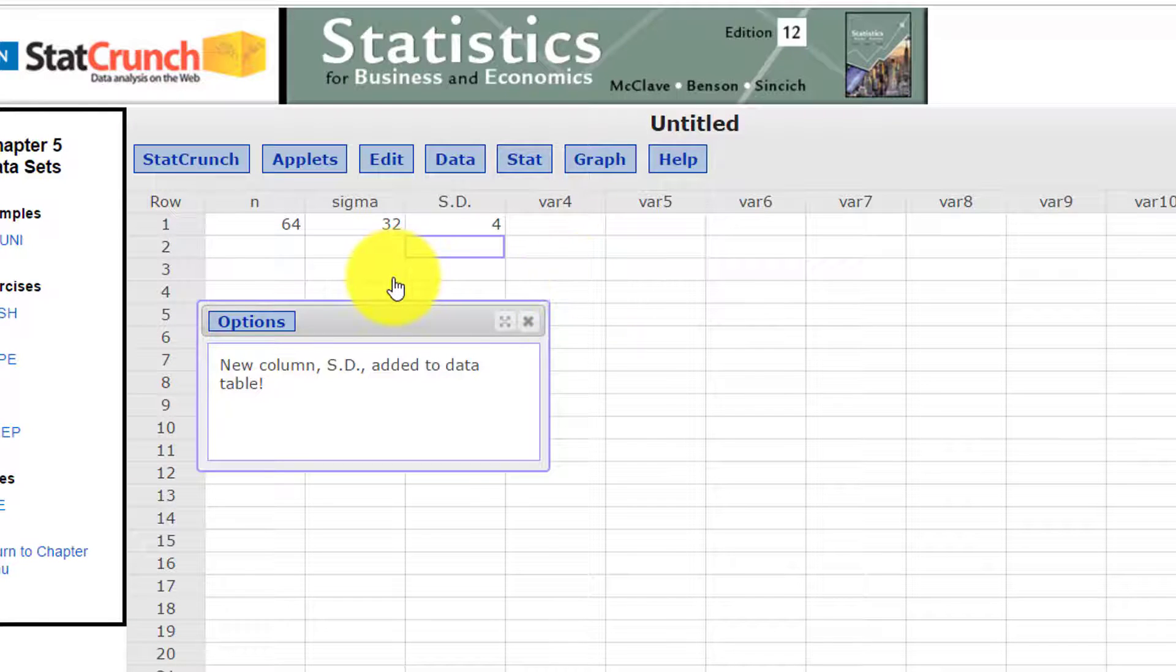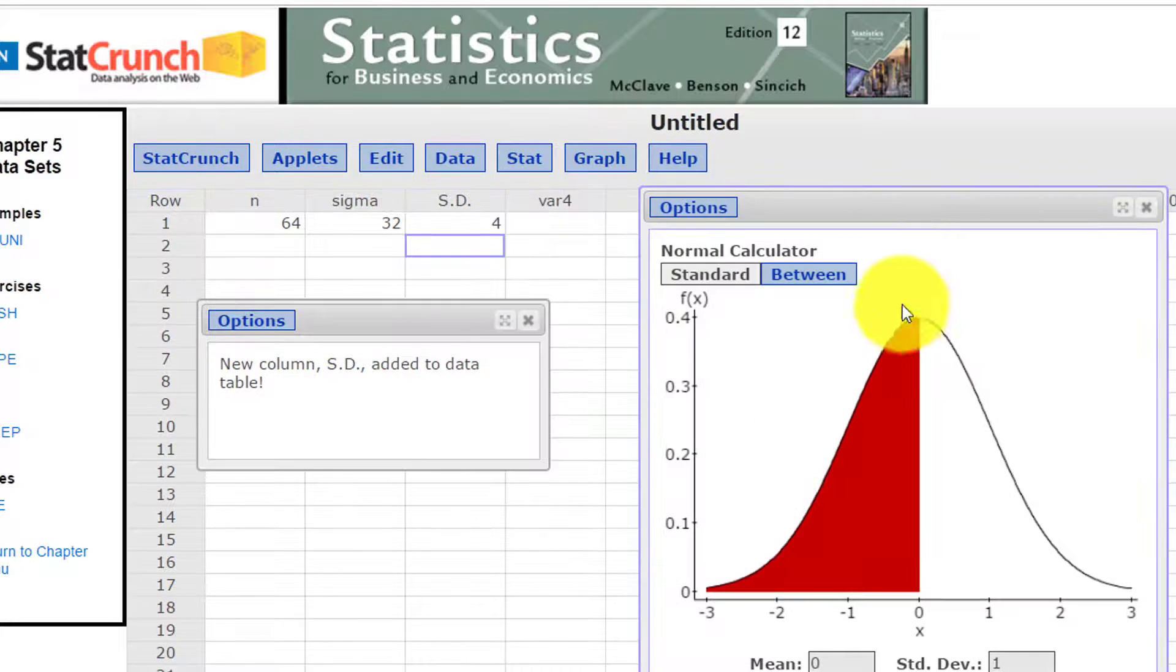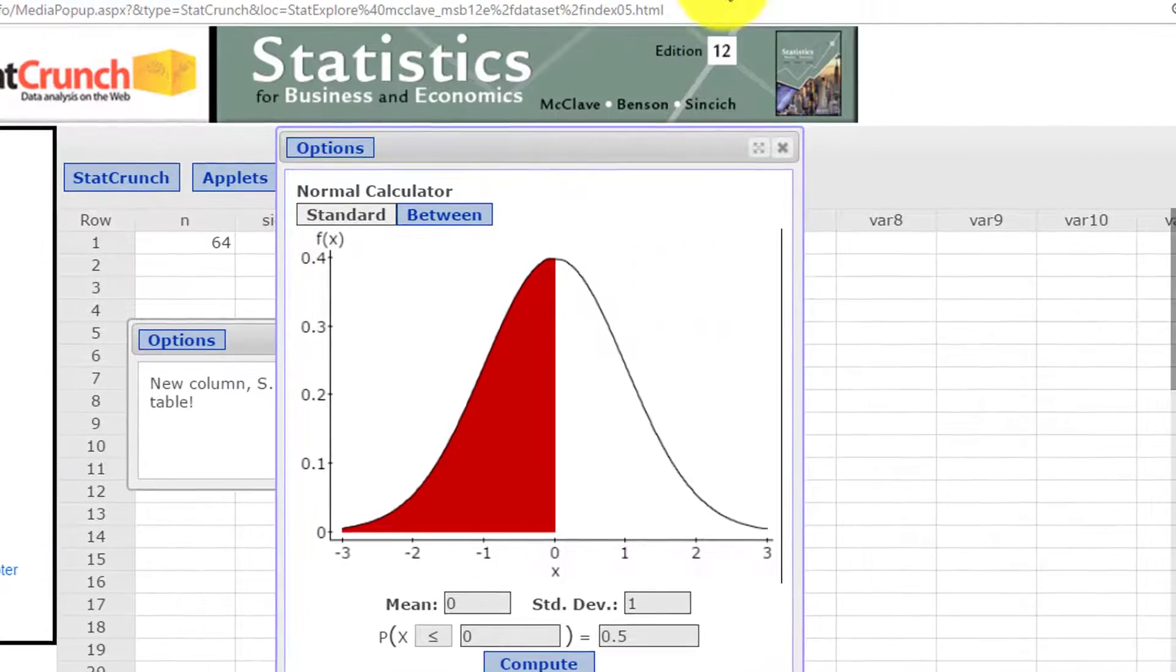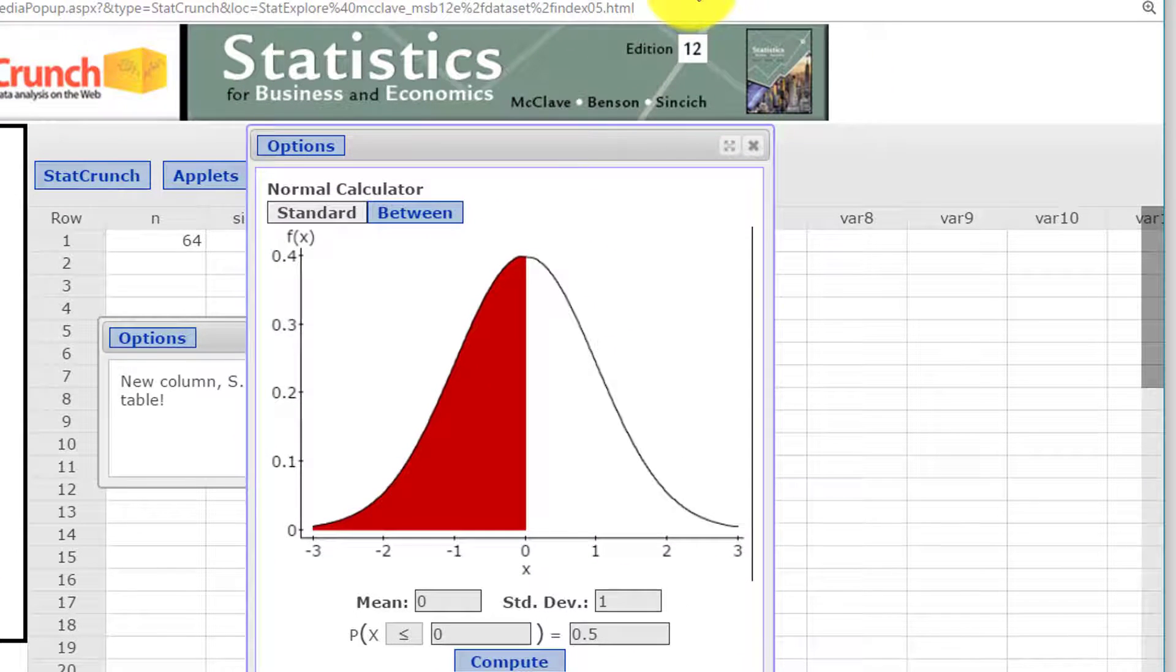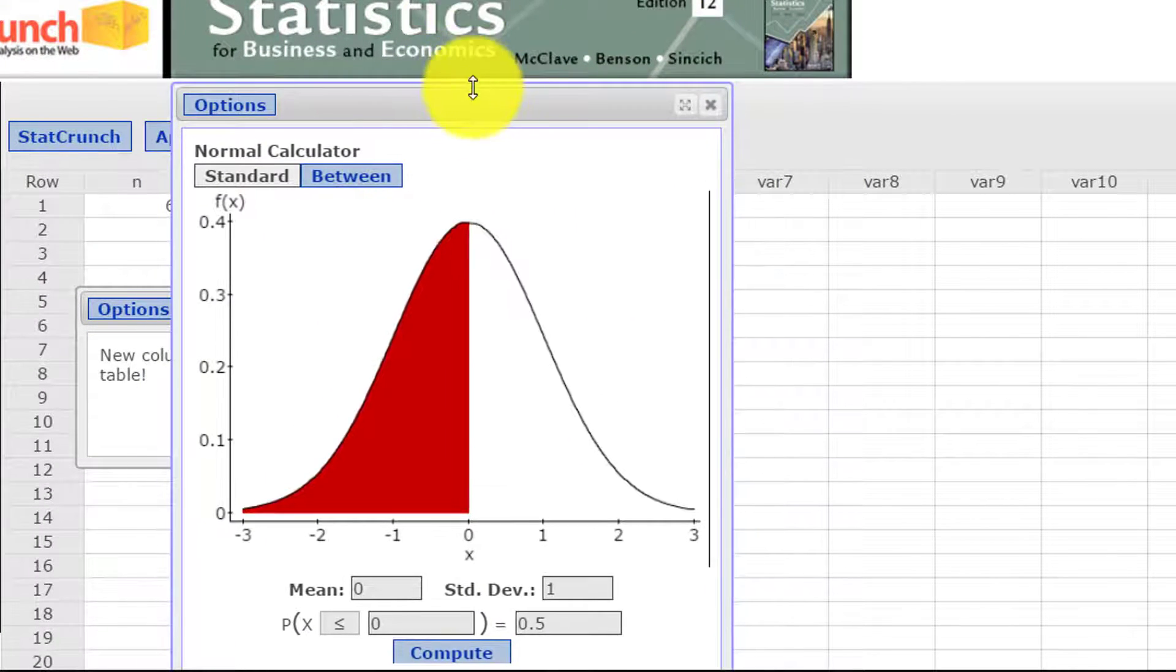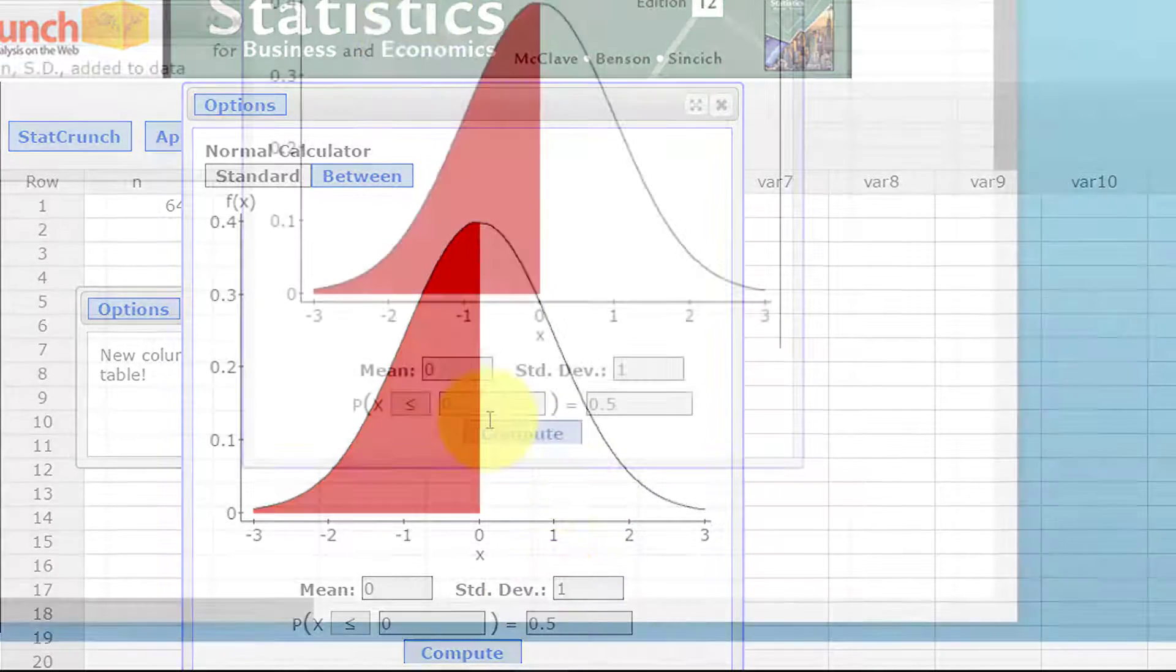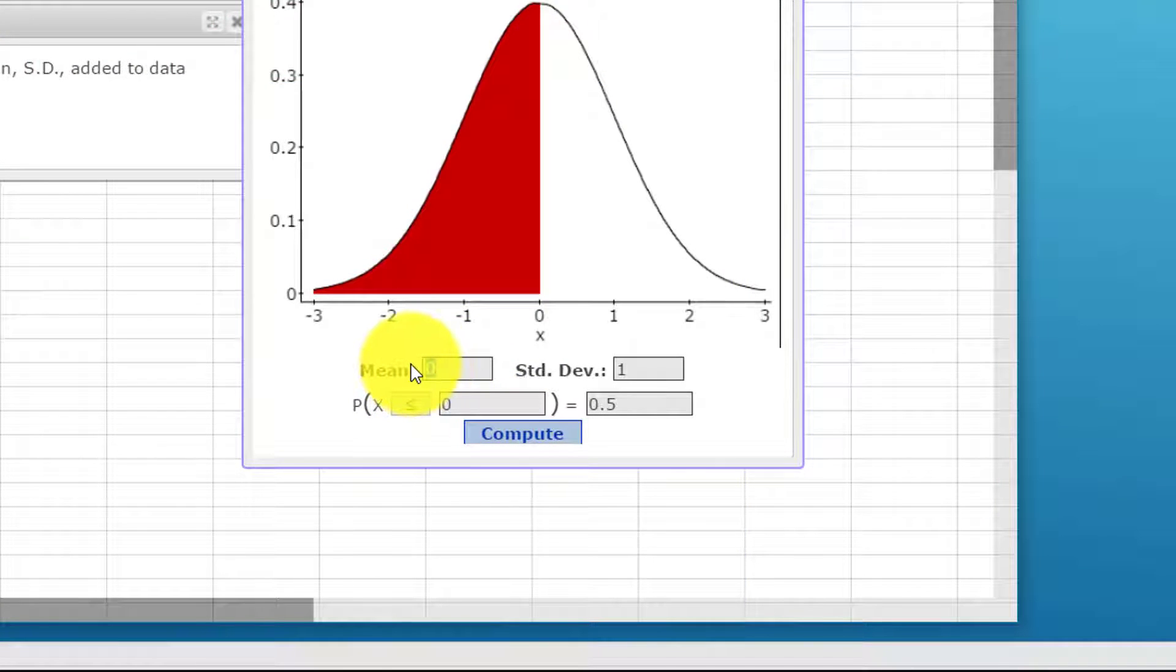Once we know our mean of our sample, which again is the same as the mean of the population, and the standard deviation of the sample, we can click on stat, calculators, normal, and we bring up our calculator for the standard normal distribution. It comes up offering us the standard normal, which is a mean of 0 and standard deviation of 1. We want to change that and we're going to put in our mean of the sample, which is 48,